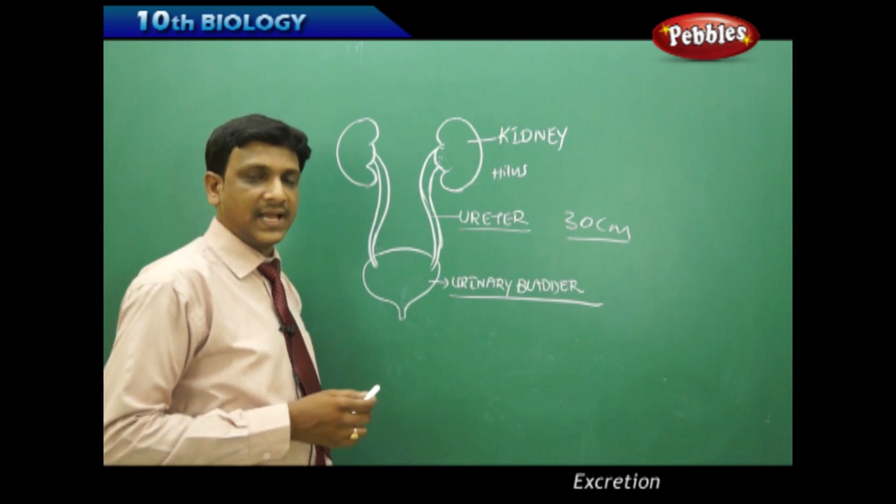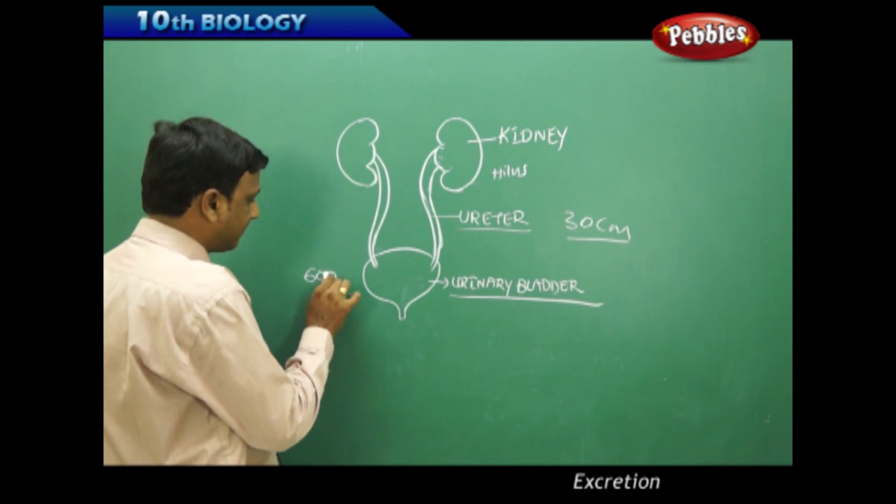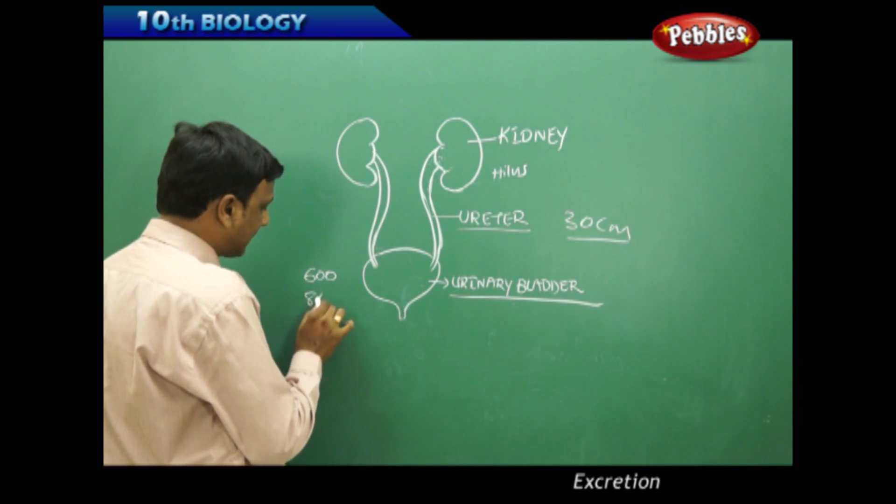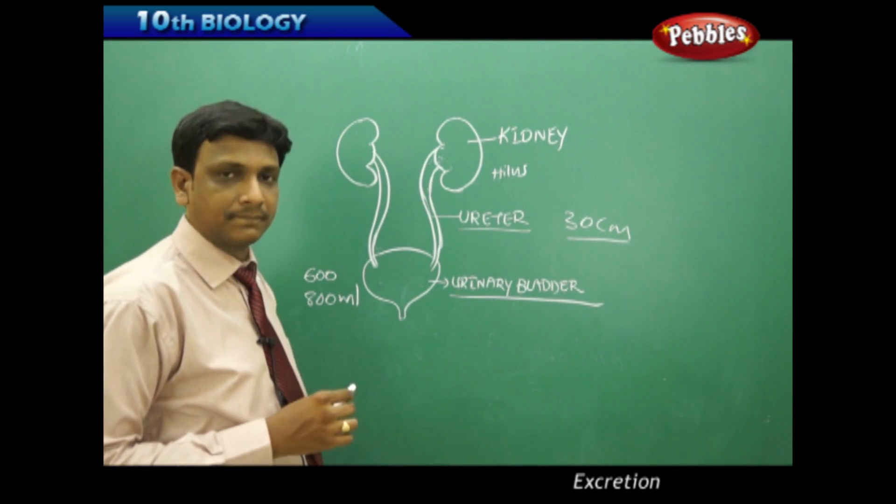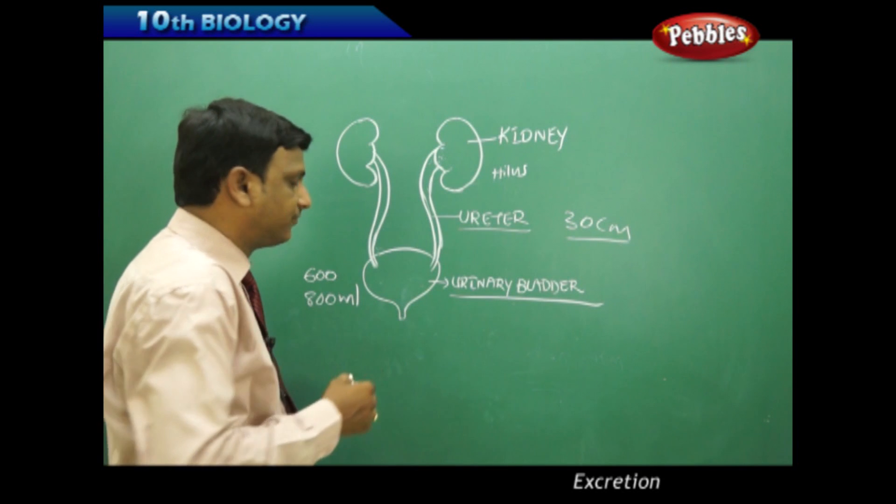The urinary bladder is an elastic organ which can hold up to 600 to 800 ml of urine. That is the capacity of the urinary bladder.